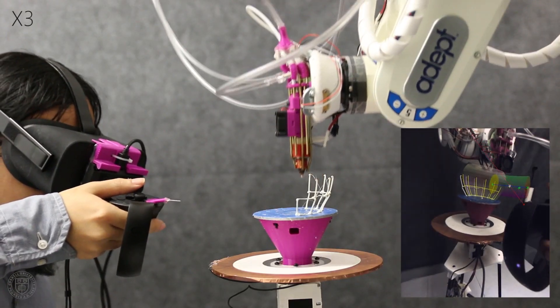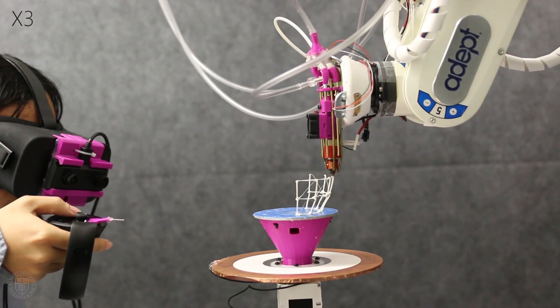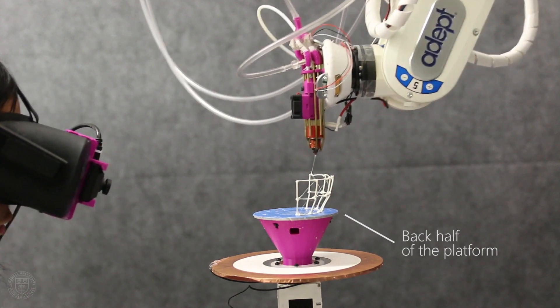The user designs 3D primitives in augmented reality at the front half of the platform. Meanwhile, the robotic 3D printer builds a wireframe representation of the design at the back.